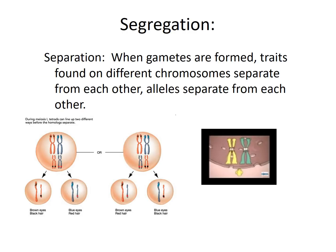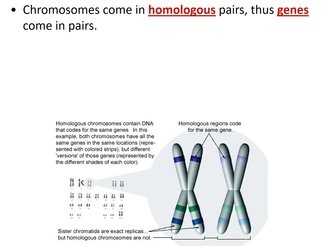Segregation is another principle Mendel talked about — the idea that when gametes are formed, traits found on different chromosomes separate from each other into the gametes. You get all of those chromosomes separating and you only get one of the pair. When we talk about pairs, we're talking about homologous pairs of chromosomes. These are chromosomes that contain the same genes but not necessarily the same versions of genes. It's good to remember that genes come in pairs.